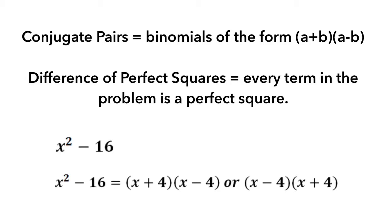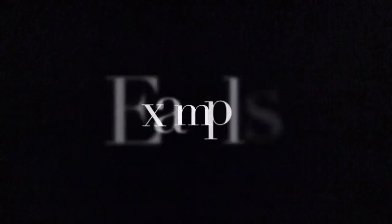The difference of perfect squares is where every term in the problem is a perfect square. Now that we know what conjugate pairs are, let's take a look at some examples.